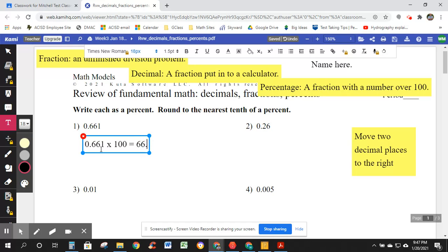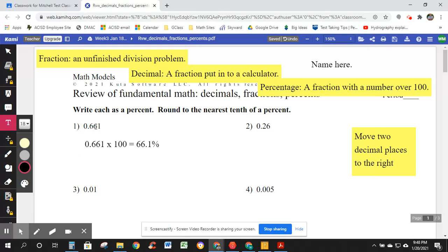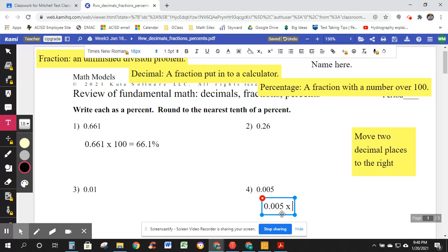So 0.661. Move two decimal places to the right. What happens is we are multiplying times 100. Two decimal places to the right. 66.1 percent. The decimal 0.661 is 66.1 percent. Let's try that down here. 0.005 times 100. Move two decimal places to the right. 0.5 percent.